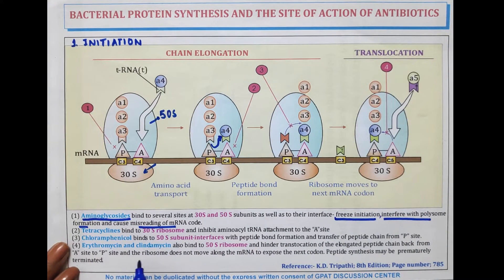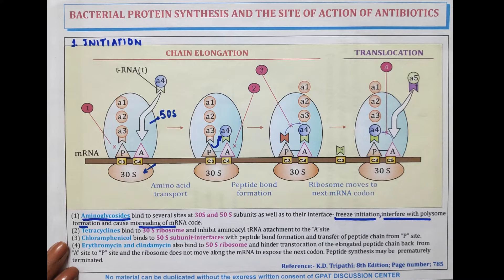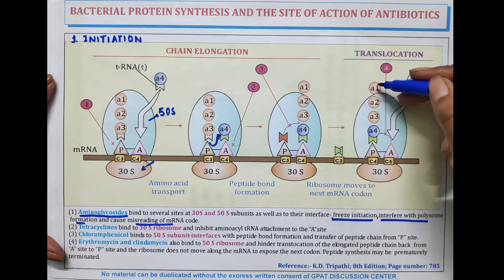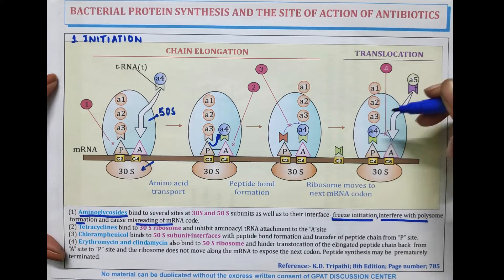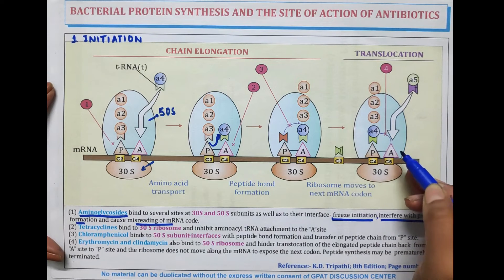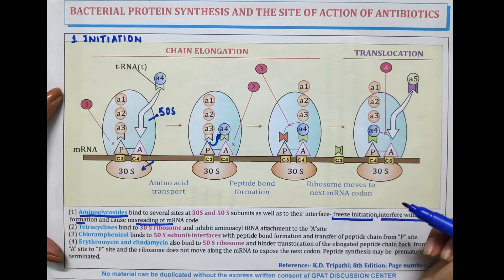Erythromycin and clindamycin bind at the 50S ribosome and hinder the translocation of the elongated peptide chain back from the A site to the P site, and the ribosome does not move along the mRNA to expose the next codon, so protein synthesis may be prematurely terminated. When amino acids are forwarded to the A site from the P site and a new amino acid is added to the chain, these all amino acids then move from the A site to the P site. This step of moving the new chain of amino acids from the A site to the P site is inhibited by erythromycin and clindamycin — it inhibits the translocation step.